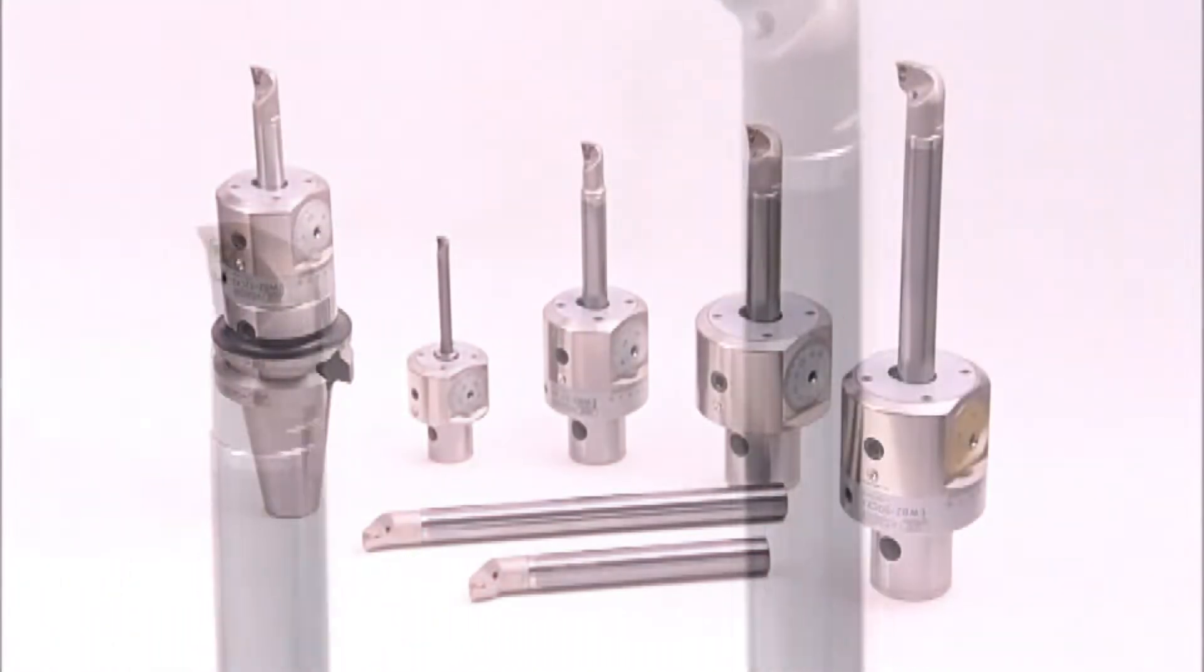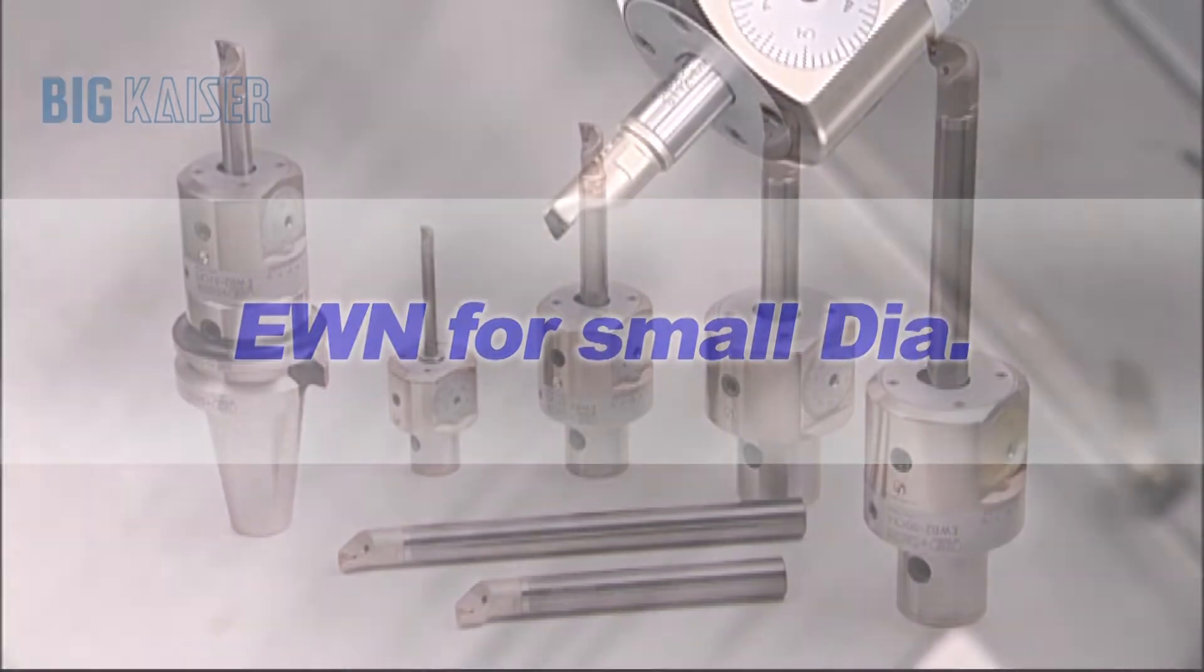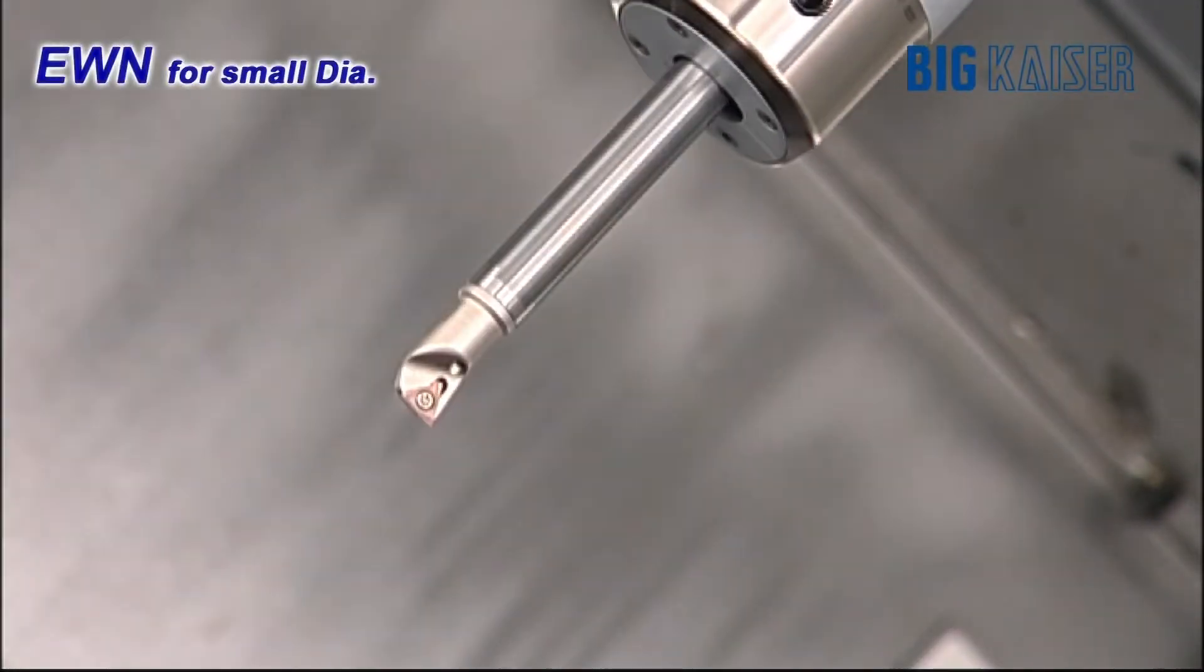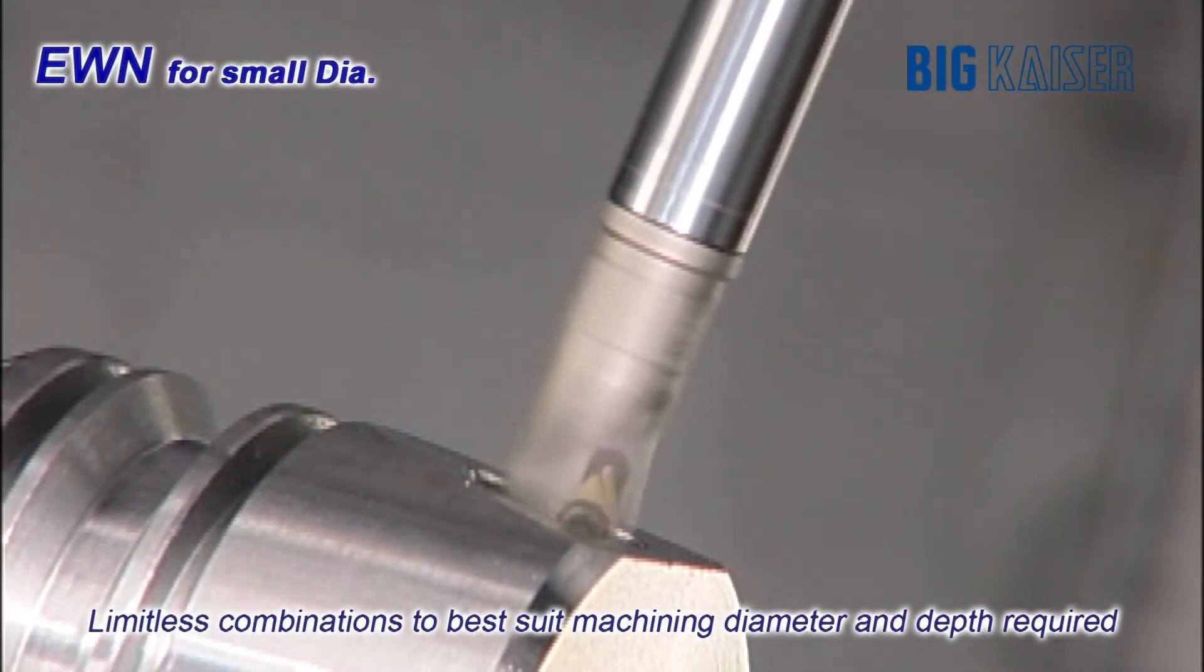The EWN series also covers small diameter applications under 50 millimeters using steel and carbide bars that can telescope into the head to minimize excess tool length. Diameters down to one millimeter can be achieved.